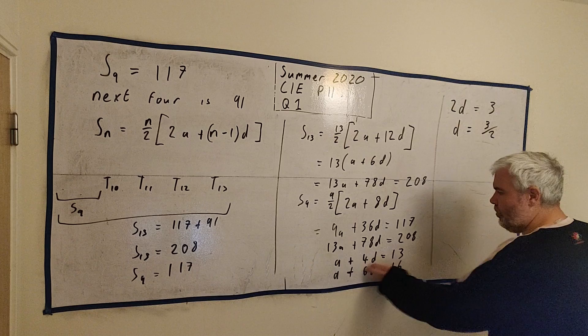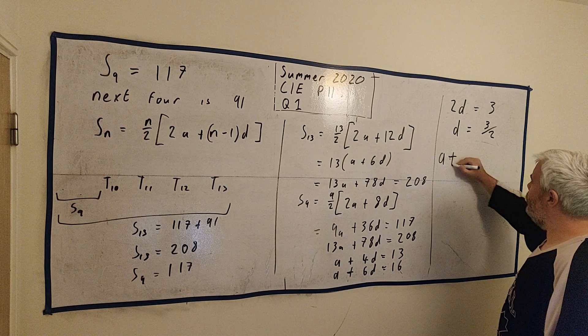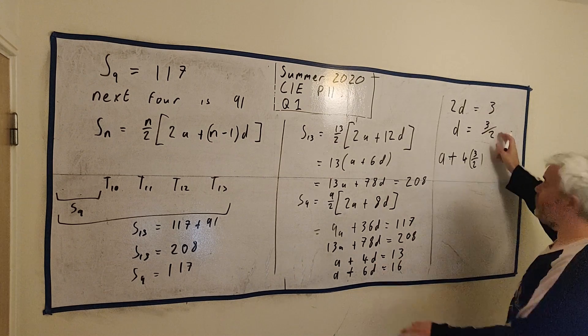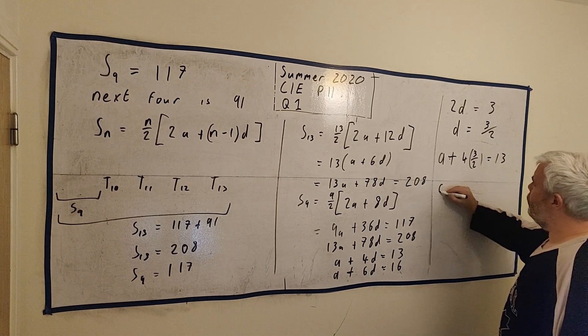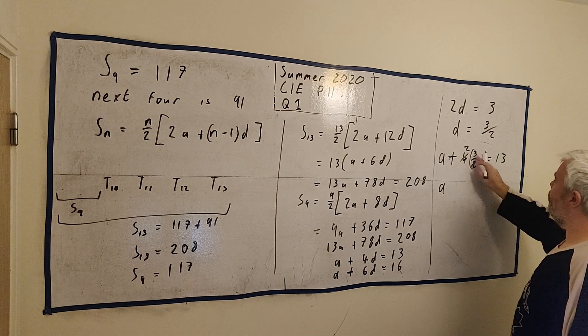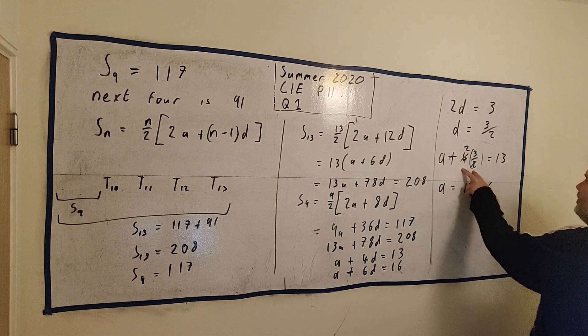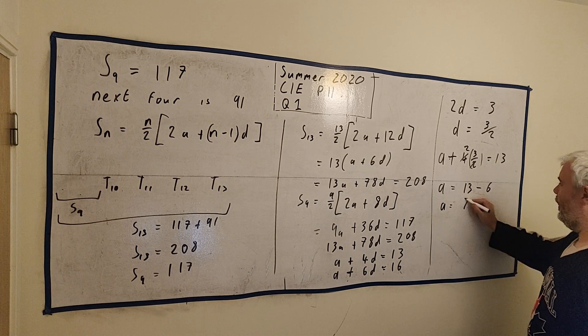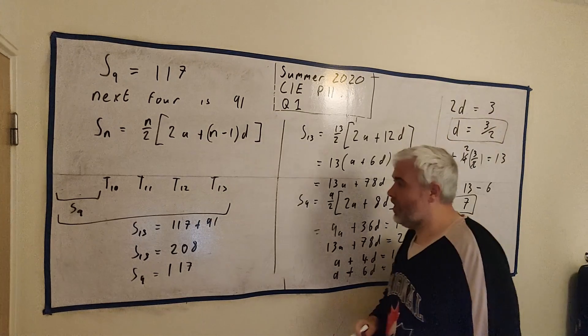Now, to get a, just use whichever line you want. I'll use the top line here. a plus 4 times 3 over 2. We know what d is, we just found what it is, so put it in. And that equals 13. So a, 4 divided by 2 is 2, 2 times 3 is 6. So a must equal 13 minus 6. So a must equal 7. That's our answers. a equals 7, d equals 3 over 2.